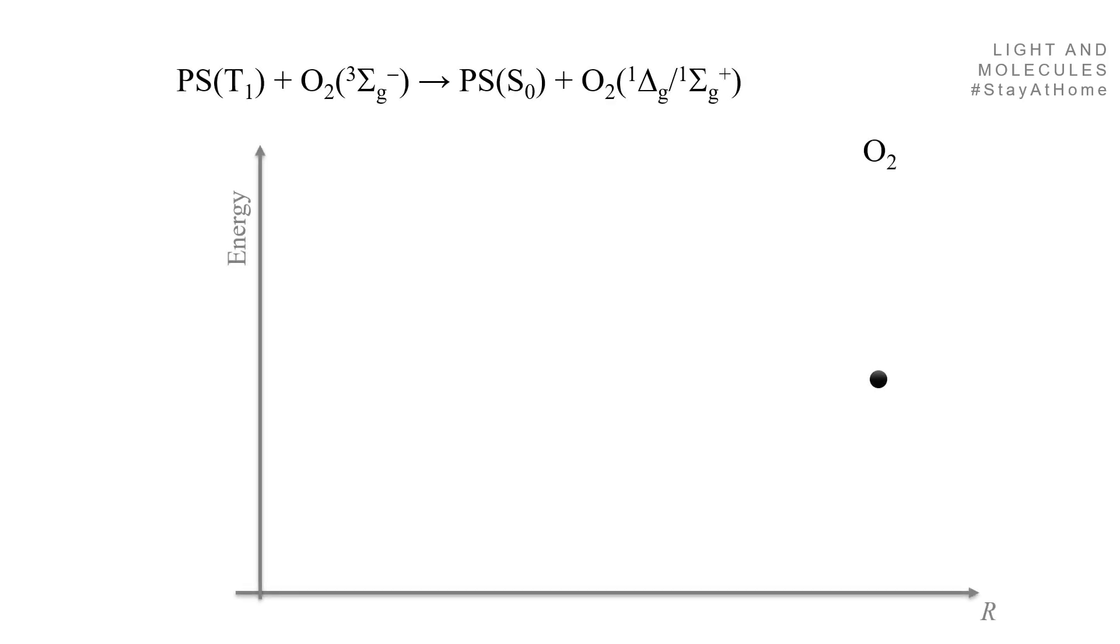Imagine the situation: you have this reaction. It's a photosensitizer in a triplet state interacts with the oxygen in the ground state, and then it produces the photosensitizer in the ground state plus the oxygen in a singlet state, either delta or sigma.